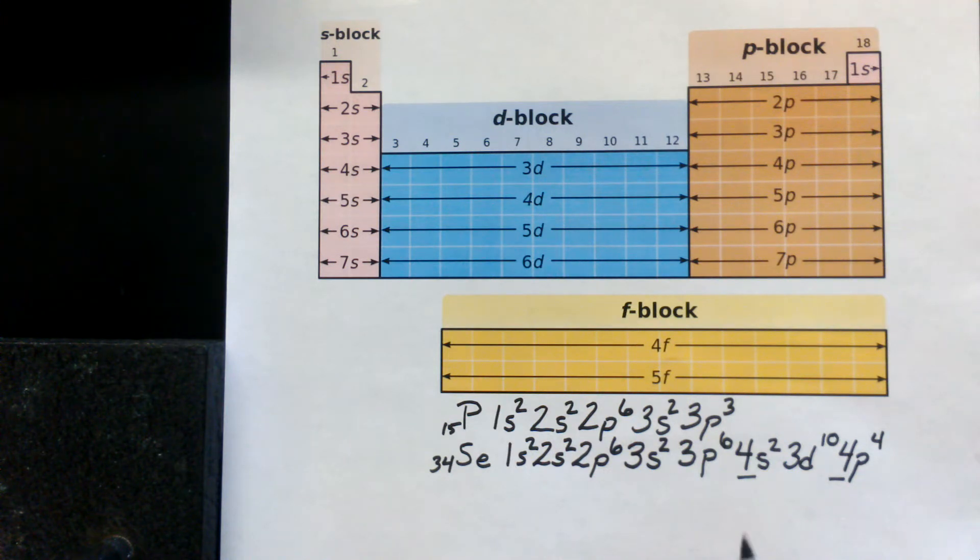Finally, what I'd like to show you is on these configurations, they can become very lengthy or complex to write, because as you move down the periodic table, we get more and more orbitals occupied. We can do a shortcut.